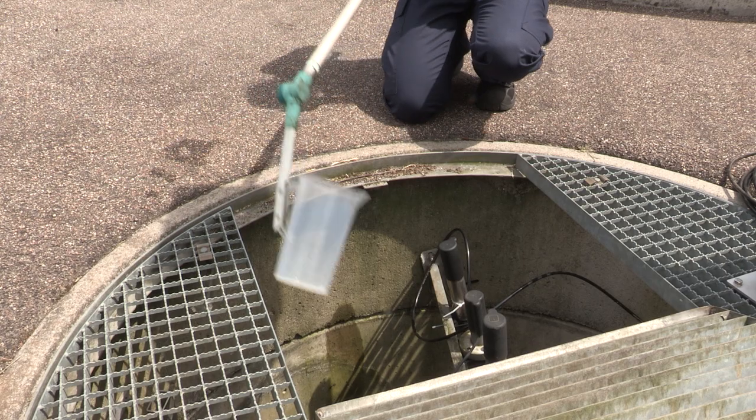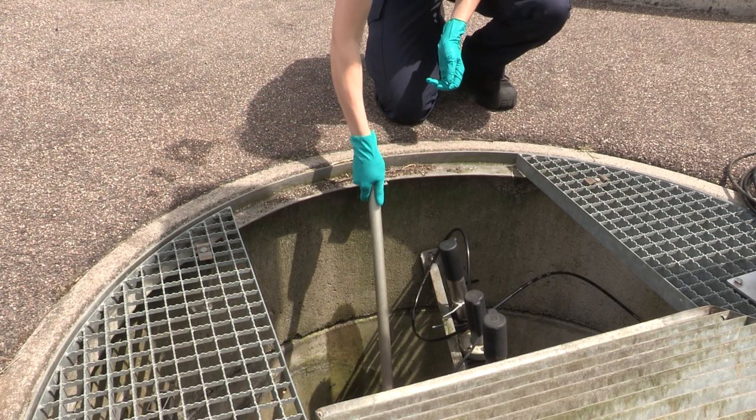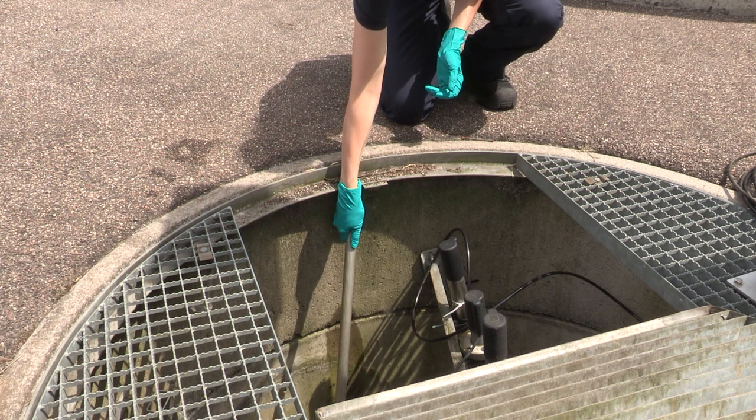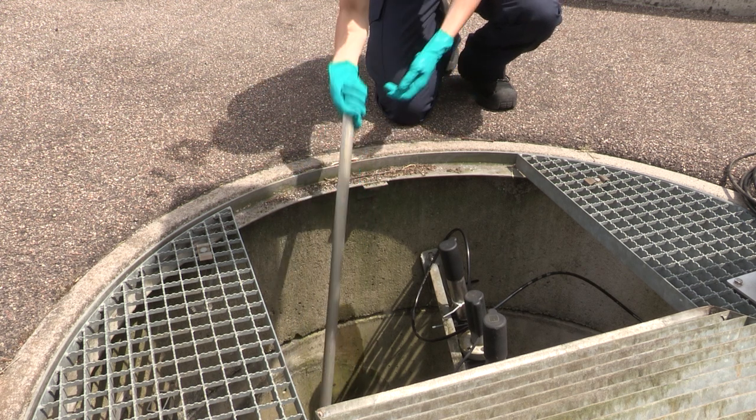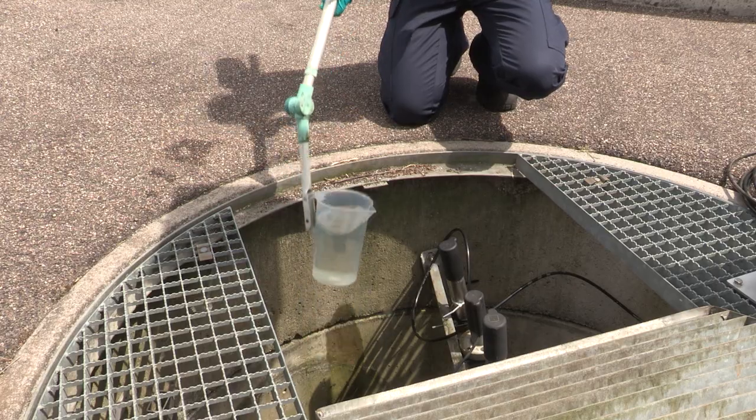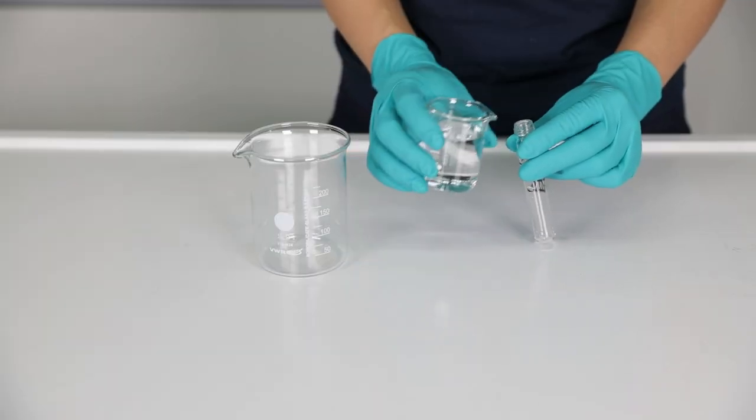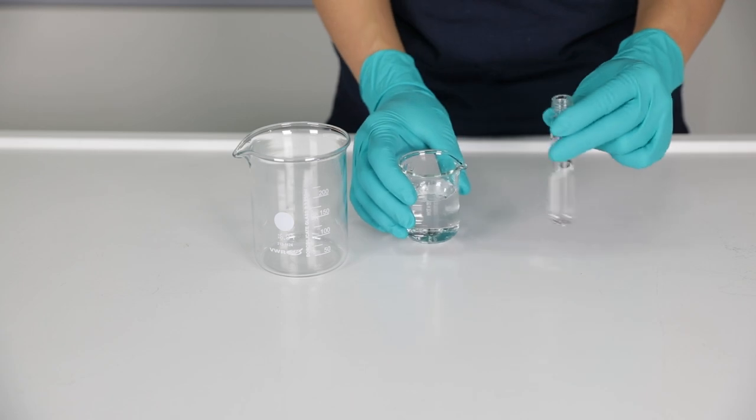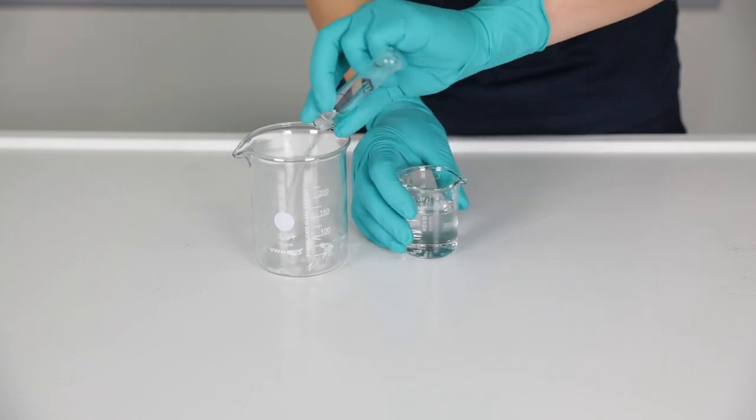First, start with the serial measurement of the photometer. Therefore, take a sample out of the process close to the assembly. Then, take some sample water and rinse the cuvette carefully several times.